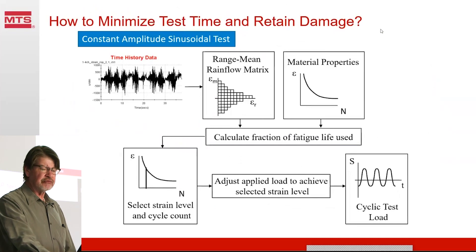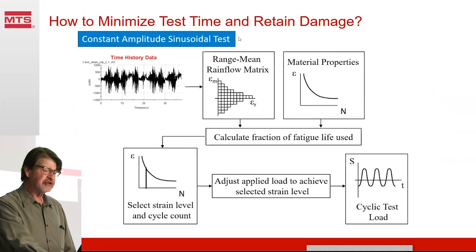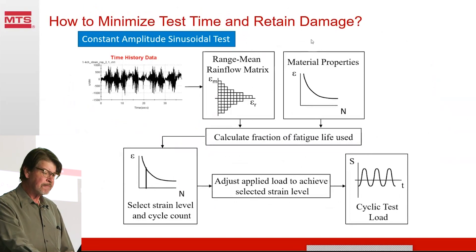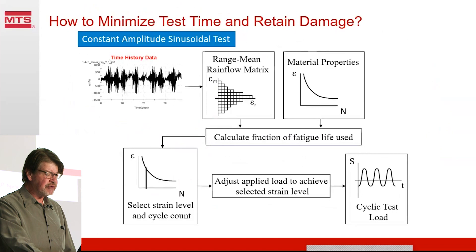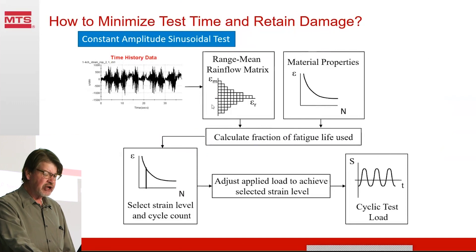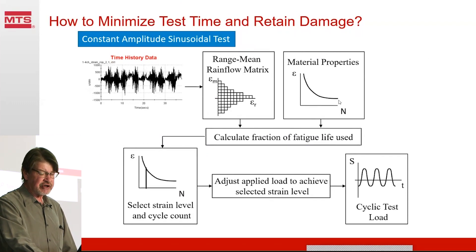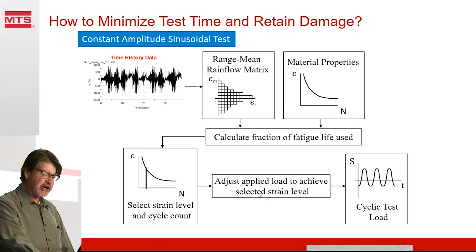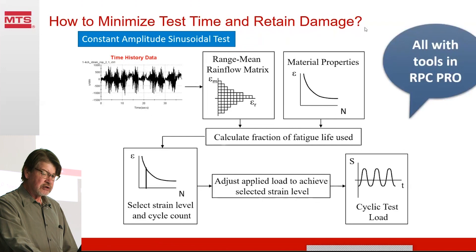How do we minimize test time and yet retain damage? A lot of times we're looking for constant amplitude sinusoidal tests — just pick an amplitude, a mean load and play it back continuously. Very simple, very straightforward. But we want equivalent damage. So if we've got a time history with a bunch of damage, we can put those strains into a range-mean rainflow matrix and evaluate the hysteresis loops and the fatigue damage for each cycle. We compare that damage from our stress-life curve and calculate the damage each cycle gives. That damage can be summed together, and we apply load to achieve the selected strain level, then determine how many cycles it will take to complete the test. All the tools to do that automatically are contained within RPC Pro.